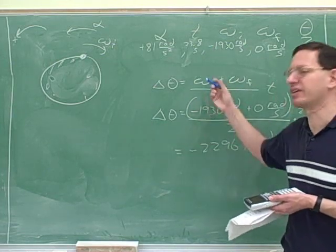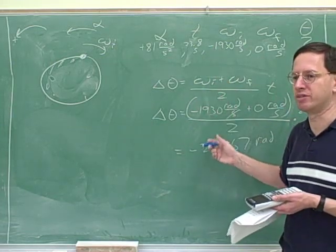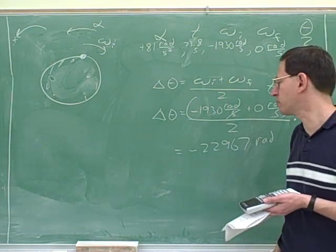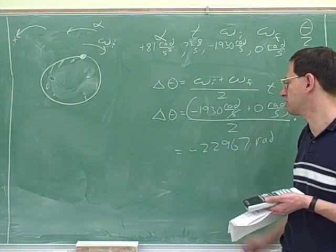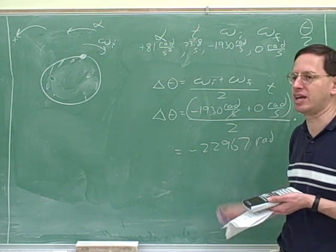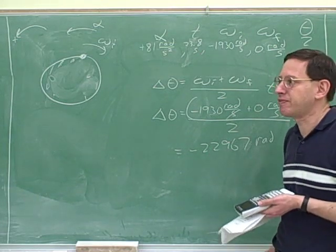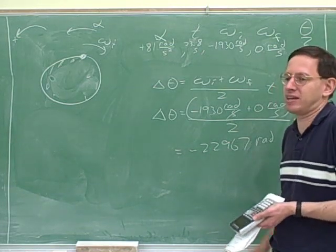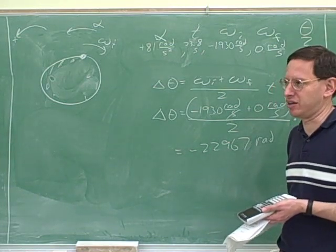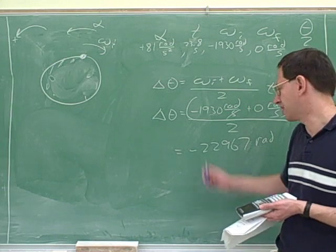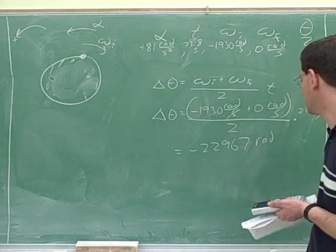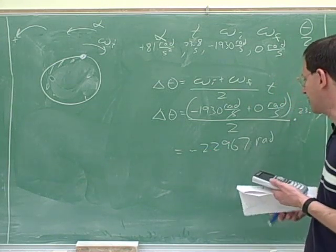So if this hadn't come out negative, again, we would have known we made a mistake. It's really important to always make sure your signs make common sense, because very often students make mistakes on the signs. A good way to catch those mistakes is checking to make sure that your answers make common sense.